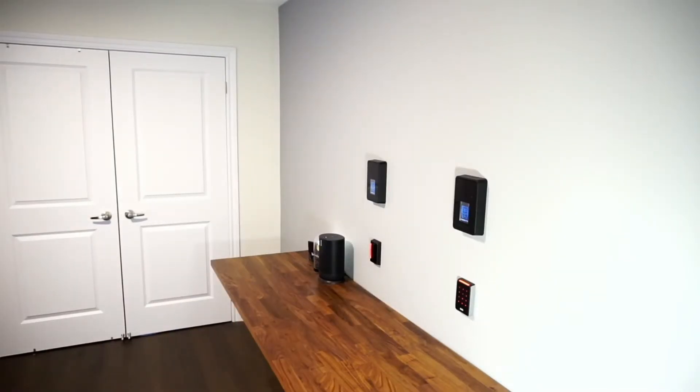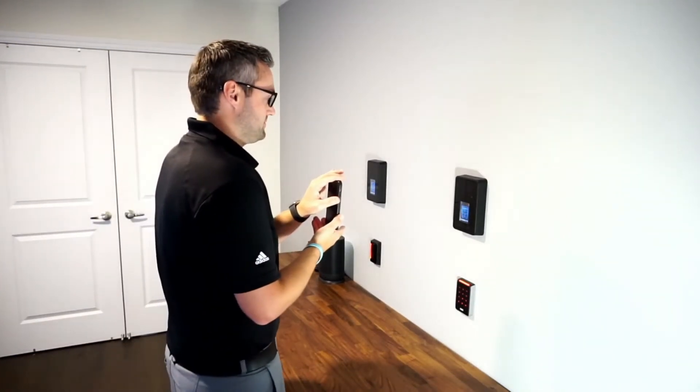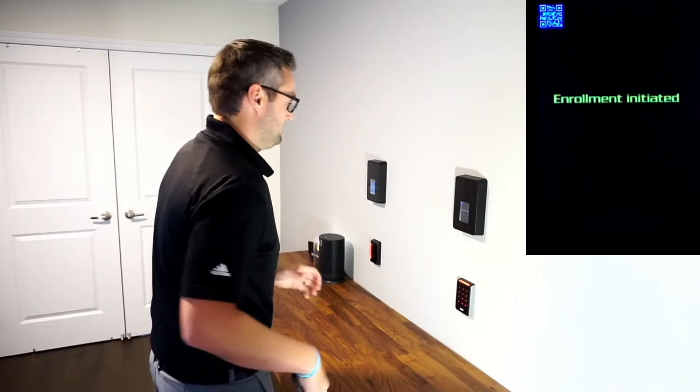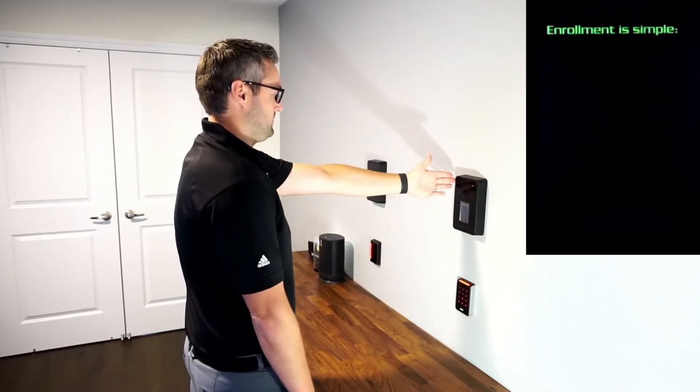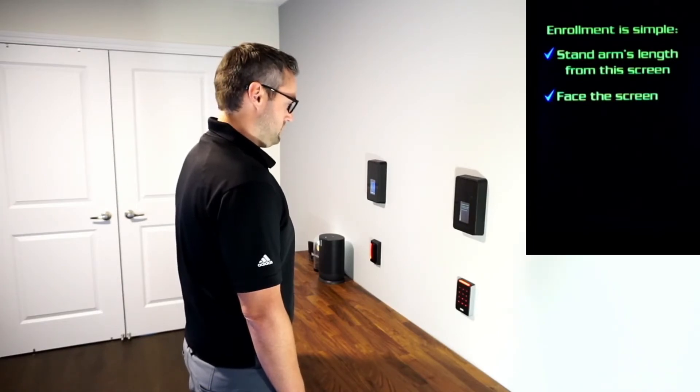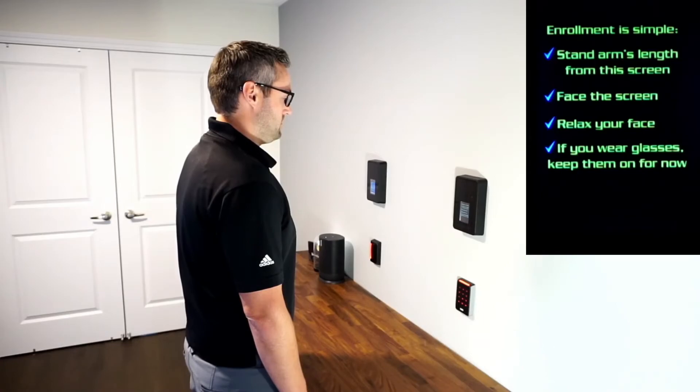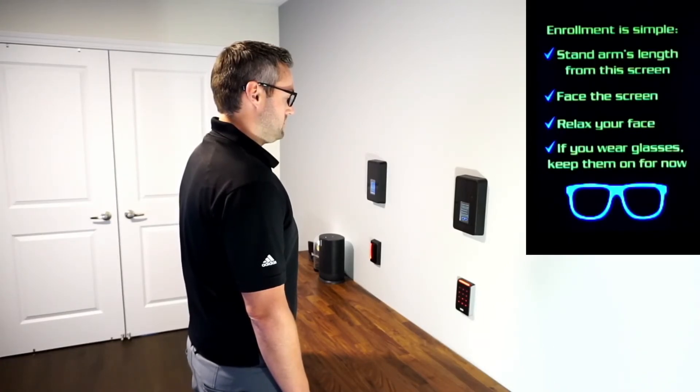If you have users that do not have physical plastic credentials, that's where Avigilon's email field comes in. If a valid email is entered for that user, we can automatically send them an invitation to enroll with a unique QR code embedded in that invitation. That user simply presents their QR code to the reader and from there, the enrollment process will be identical to the enrollment process for physical card holders.